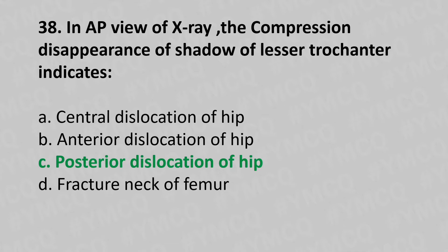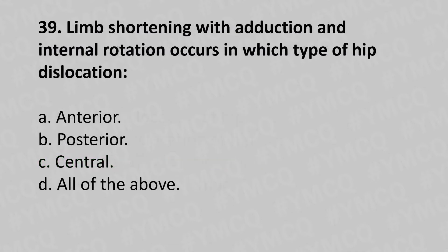Moving to our 39th question: limb shortening with adduction and internal rotation occurs in which type of hip dislocation? Option A anterior, option B posterior, option C central, option D all of the above. The answer is option B posterior.